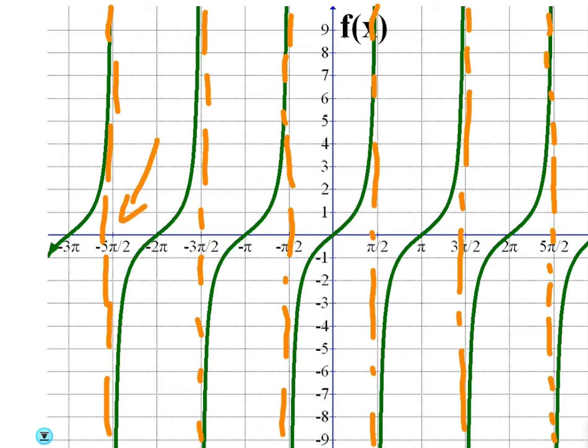So for example, at x equals negative five pi over two, the curves don't meet. So they're discontinuous there, right? Every time there's an asymptote, you have discontinuity.